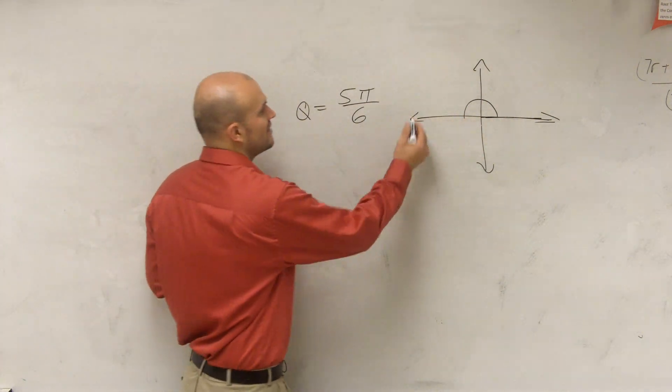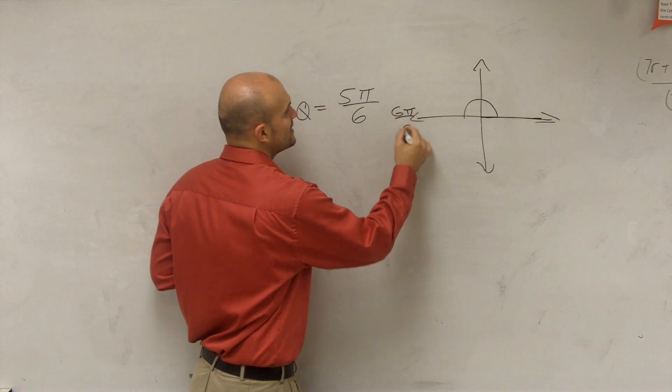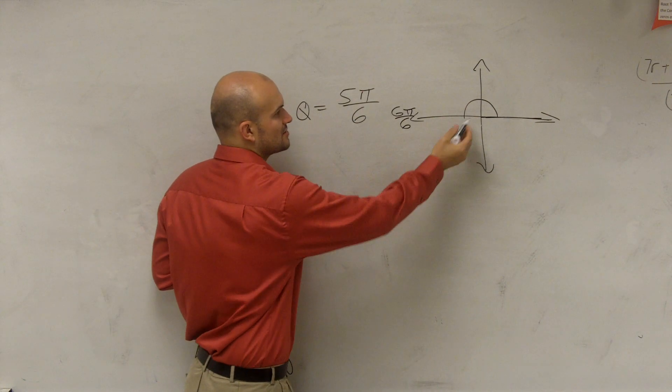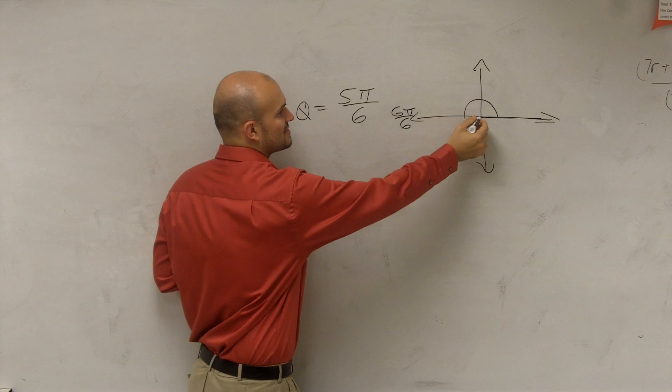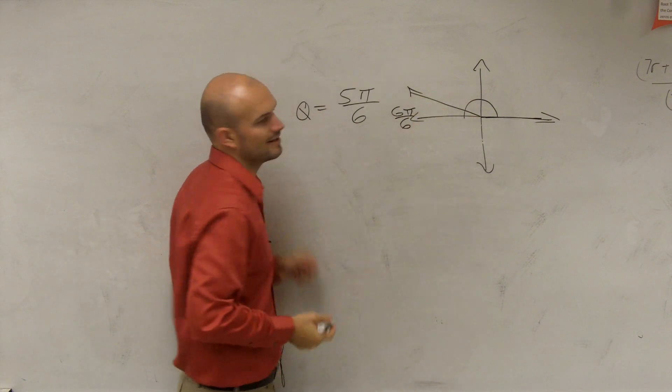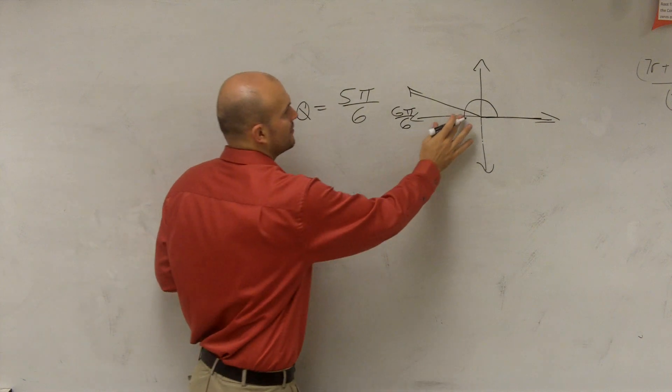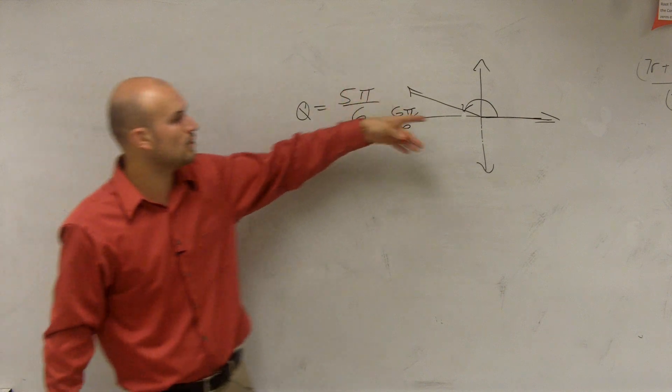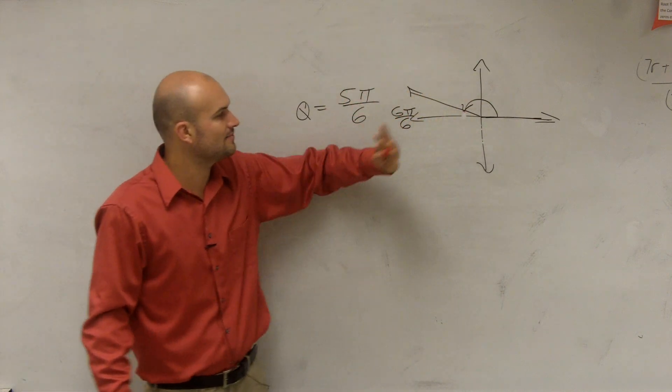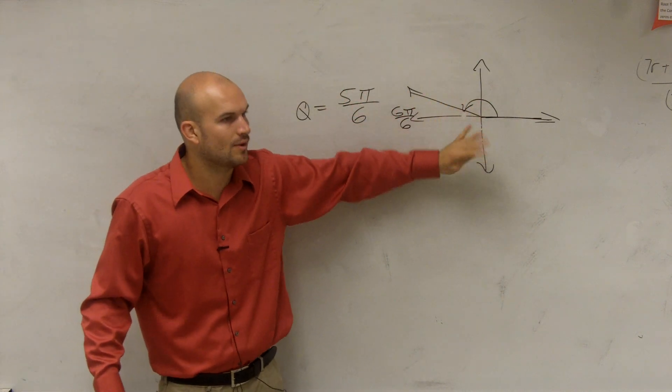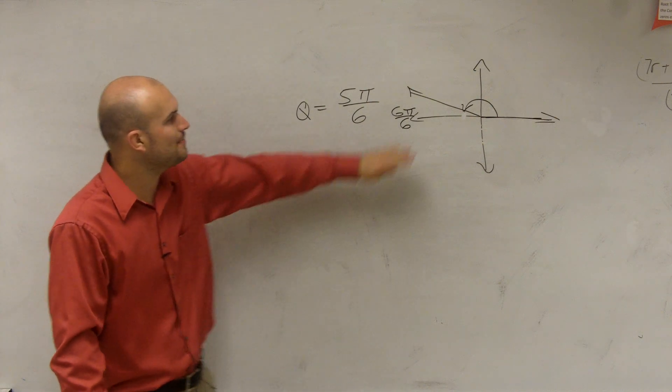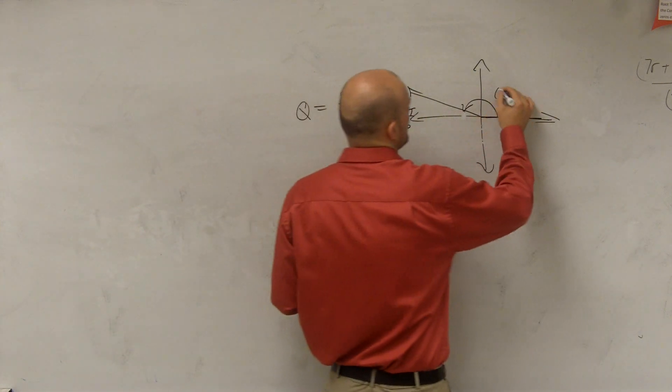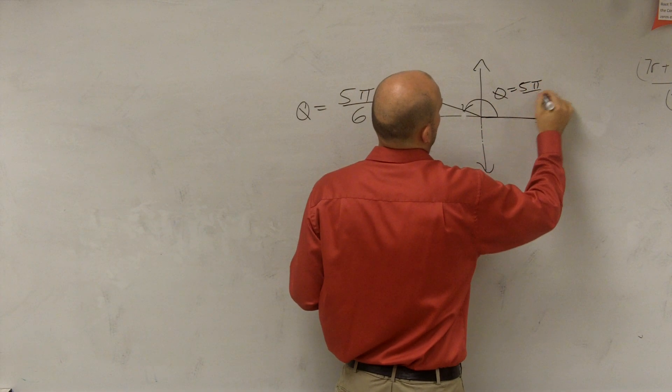So if I said well, all the way around would be 6π over 6, therefore 5π over 6 is roughly going to be like right there. We don't really need to actually know exactly where it's at. Usually we're just going to be asking for what quadrant or where it's at. So 5π over 6 is roughly right there.